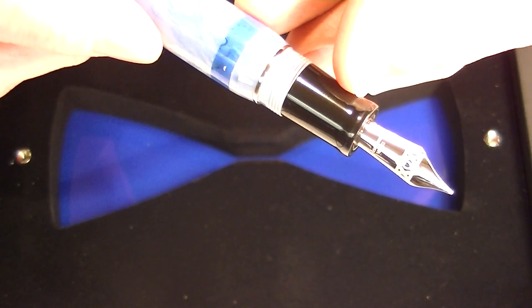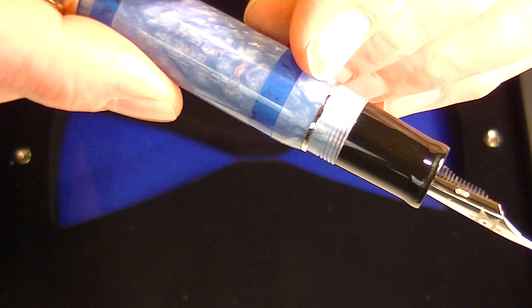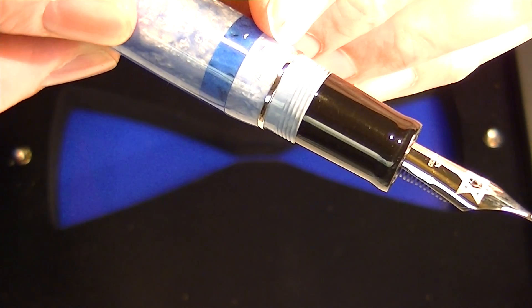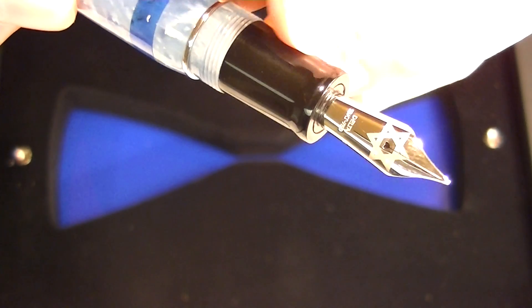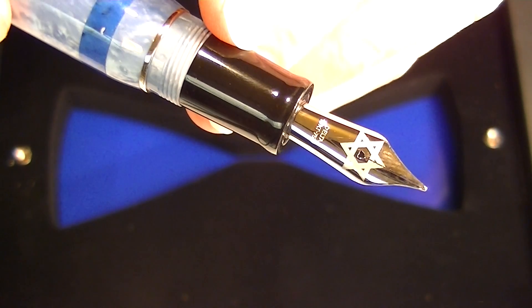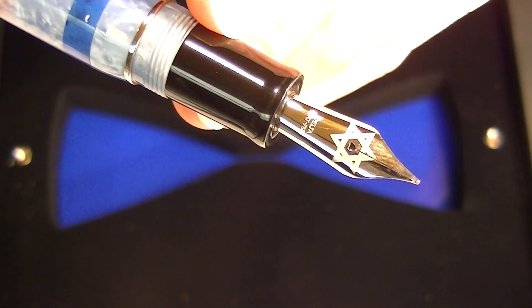The nib section is a black resin nib section. We have a small chrome band running around the pen here. And then it has an 18 karat gold nib. Printed on the nib is the Star of David.